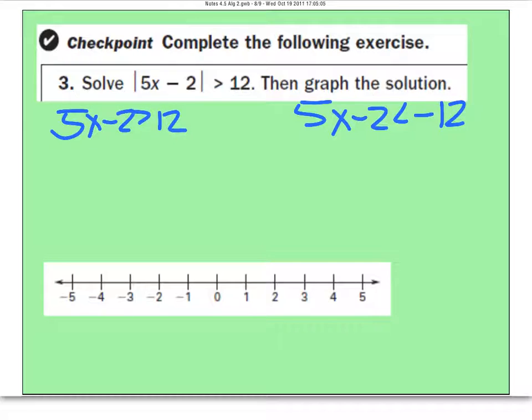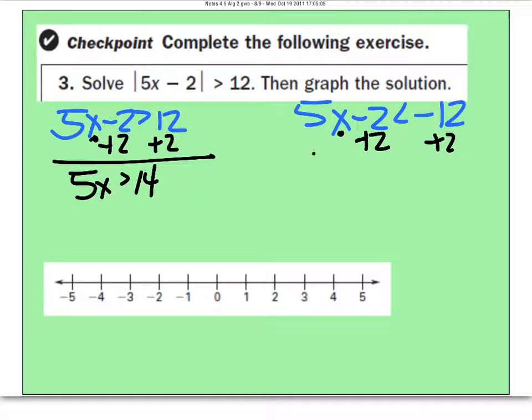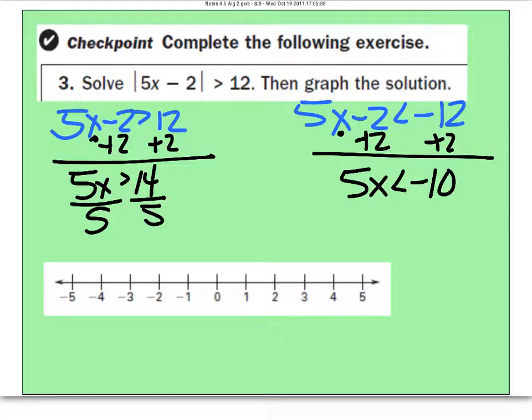Let's solve them both at the same time again. To get this x by itself, I have to move the negative 2 first. So I'm going to add 2 to both. Leaves me with 5x is greater than 14. This one's going to be 5x is less than negative 10. That's 5 times x. I'm going to divide. This is going to be x is greater than 14 over 5.